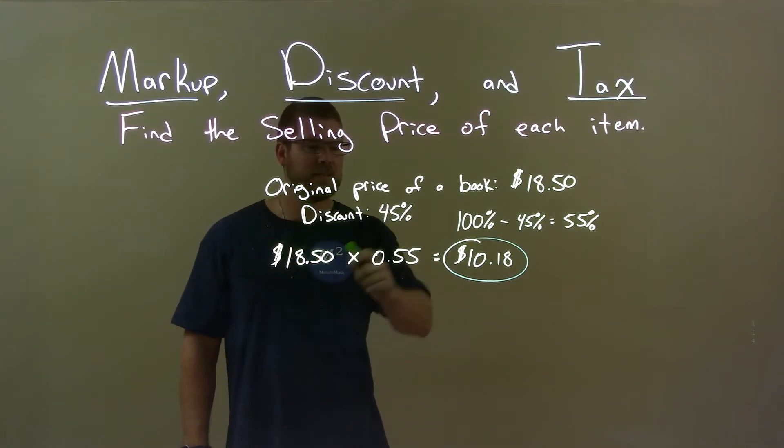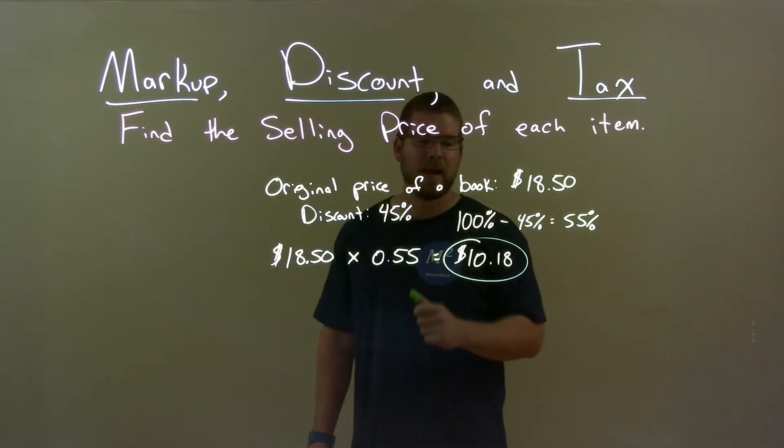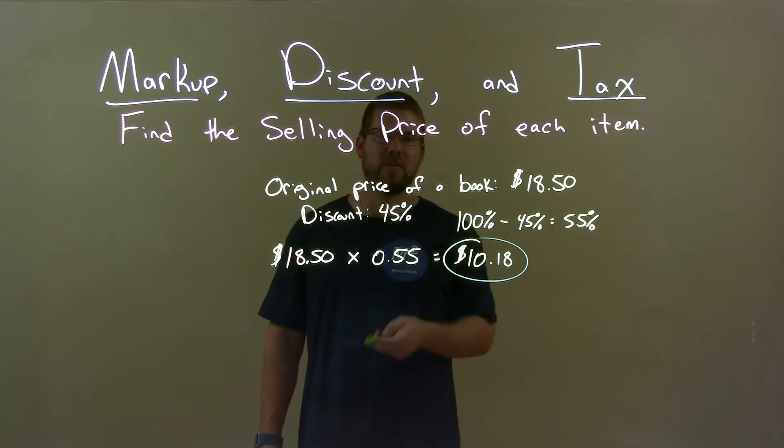So, we take the original book price, $18.50 times 0.55, and that gives us $10.18 as our final answer.